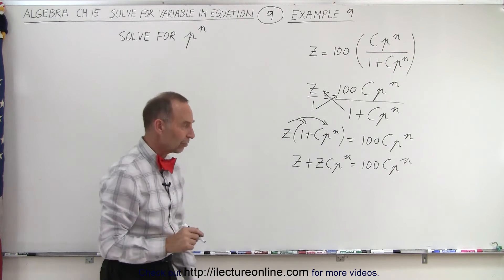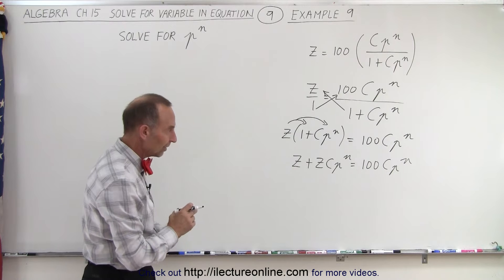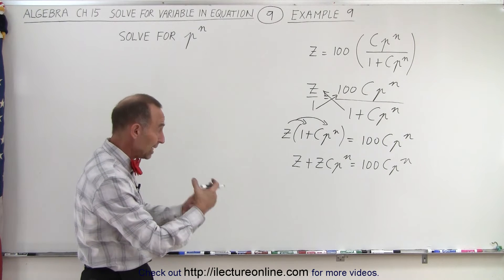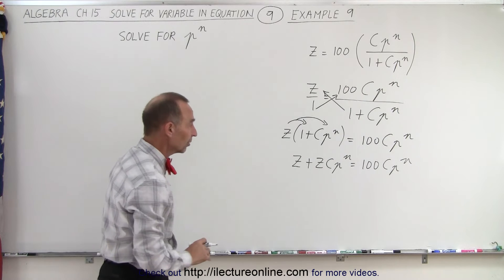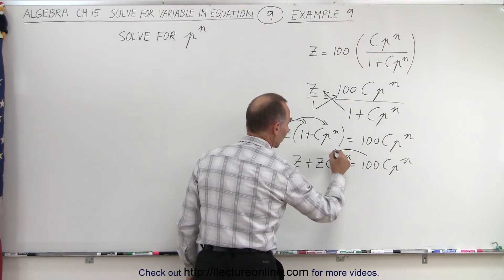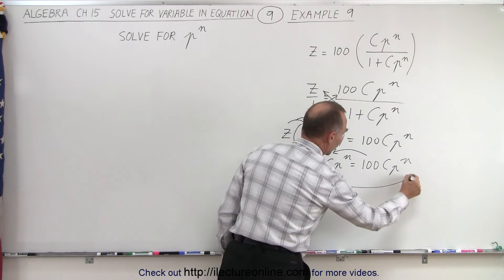And now we have a linear equation. Two of the three terms contain the variable we're looking for, the p to the n. We're going to move that to one side and everything else to the other side. So that means we're going to move this to the left and this to the right.